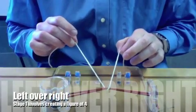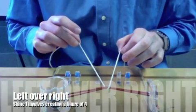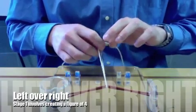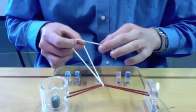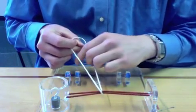The first stage is left over right. I hook the left string with the index finger of my right hand and this makes a figure of 4 facing me. I then loop the left string under and tighten the string.